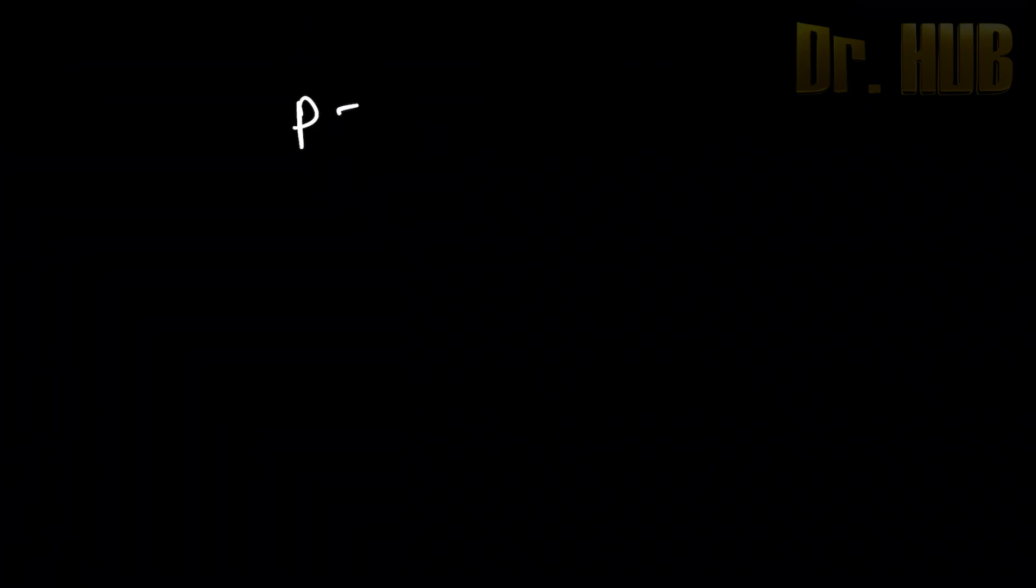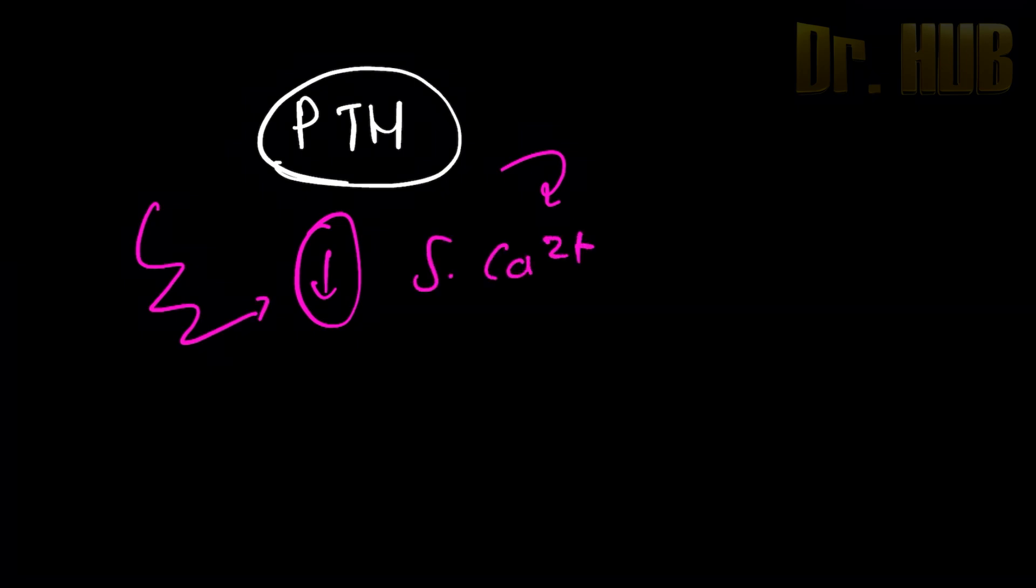Let's now understand PTH, the parathyroid hormones. What is the stimulus for secretion? The stimulus for secretion is decreased serum calcium.